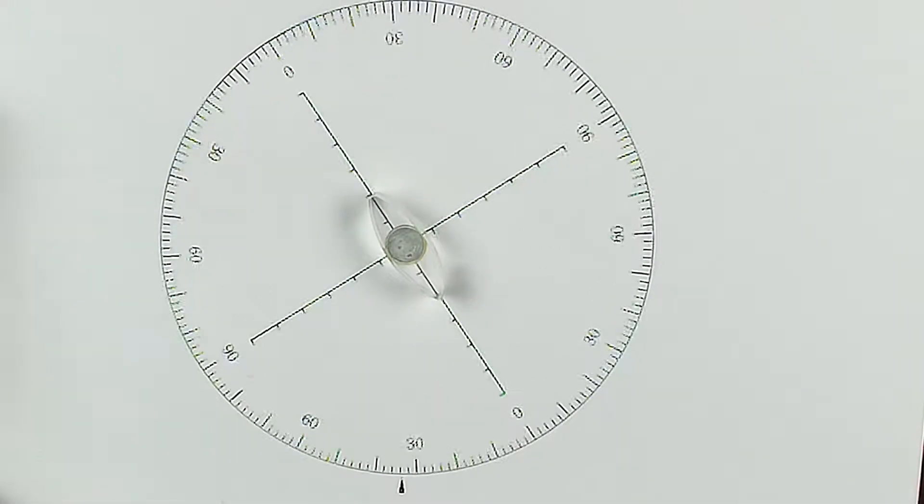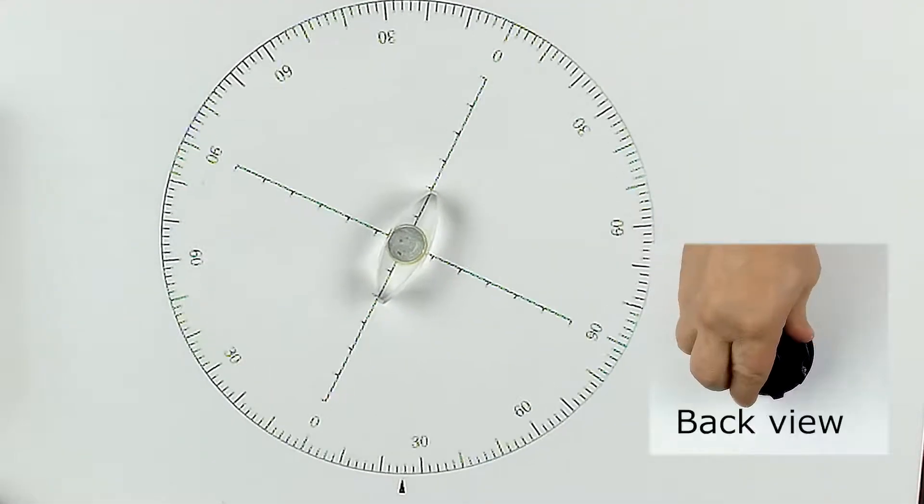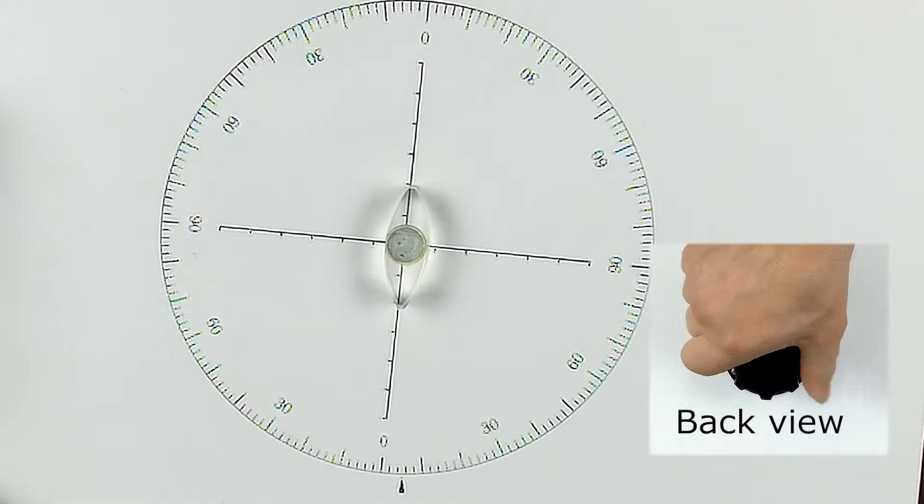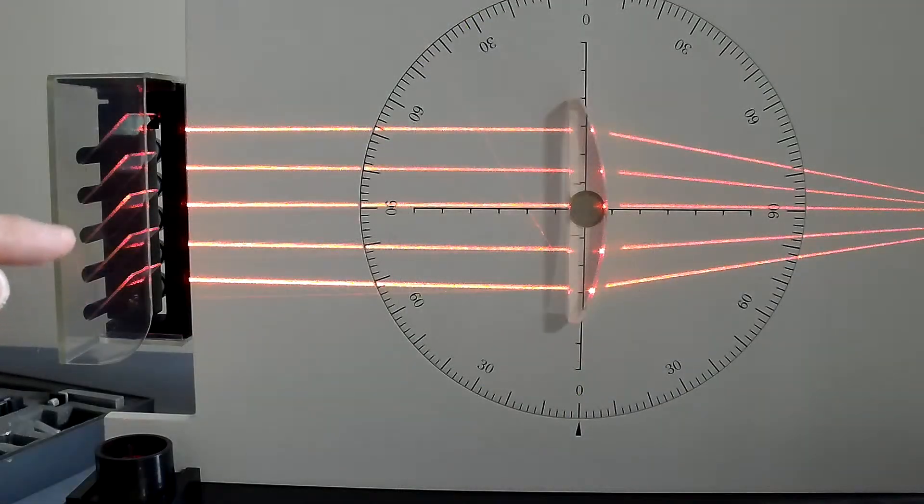The protractor can be rotated so you can adjust the angle that the light ray is hitting your optical component with. There are five partially silvered mirrors that are all independently adjustable, but they each provide equal intensity laser beams.